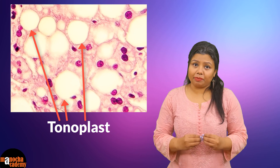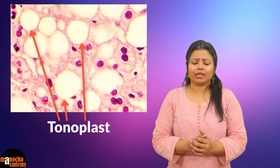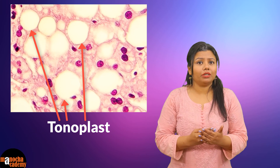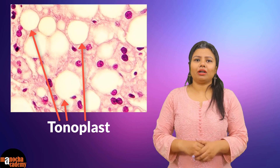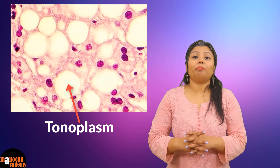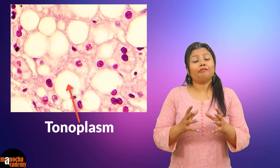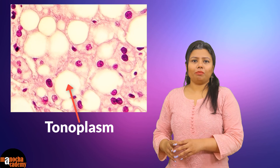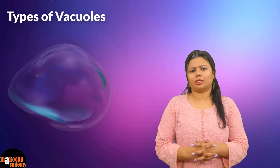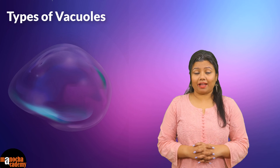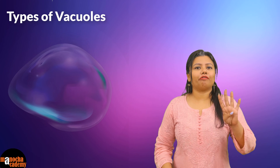Inside the membrane, the fluid that is present — it can be food, water, minerals, pigments, etc. — is known as tonoplasm. Vacuoles are usually formed from the pinching off of the ends of the cisternae of the Golgi apparatus. Depending on the type of materials present inside the vacuoles, they can be of four types: sap vacuoles, food vacuoles, contractile vacuoles, and air vacuoles.